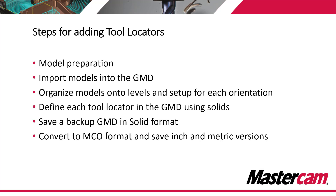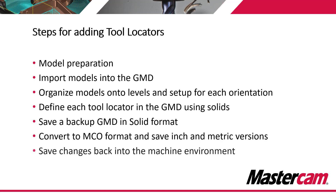Once we've saved it in a solid format, we're going to convert it to the MCO format. The MCO simplifies the model and makes it run better in simulation, but at that point we no longer have the ability to select specific features on the part. As part of the MCO conversion, we're also going to save it in both inch and metric versions, since there are two versions of the GMD in every machine environment. The last step is to take those modified GMD files and save them back into our machine environment, so every time we pull up that machine, all those tools we've added will be available.